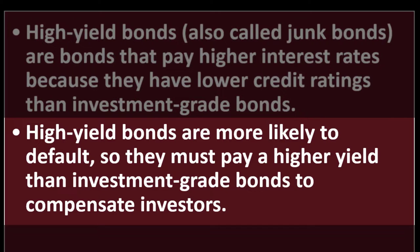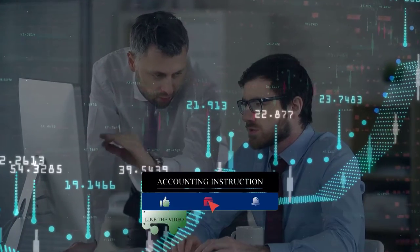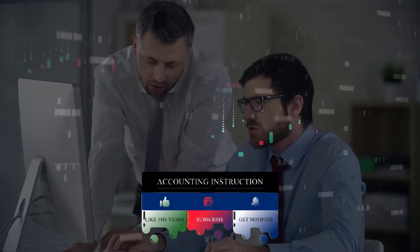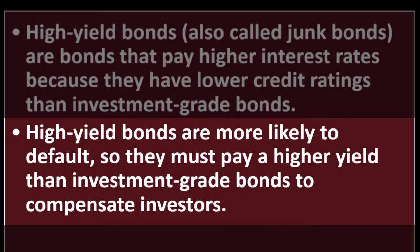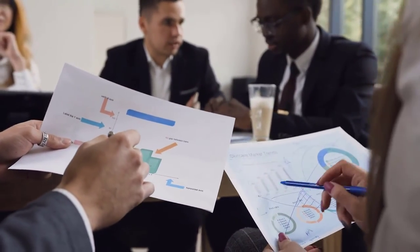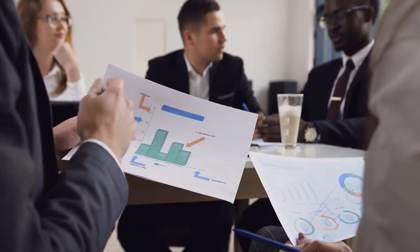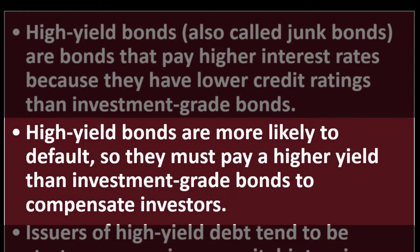High yield bonds are more likely to default, so they must pay a higher yield than investment grade bonds to compensate investors. From a market perspective, if you could put your money with someone almost guaranteed not to default — like the government — that's where you'd put it. Large corporations must pay a bit more interest to compete with lower-risk government bonds, and smaller companies must offer even higher interest rates because they are inherently more risky.